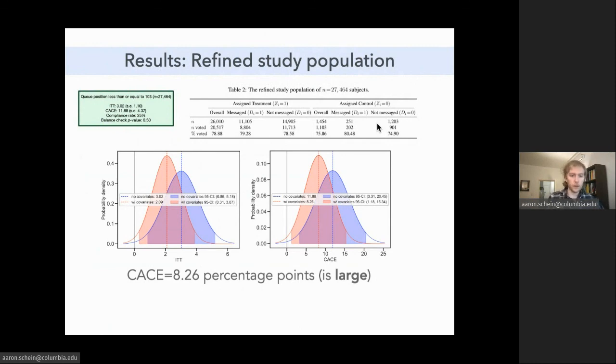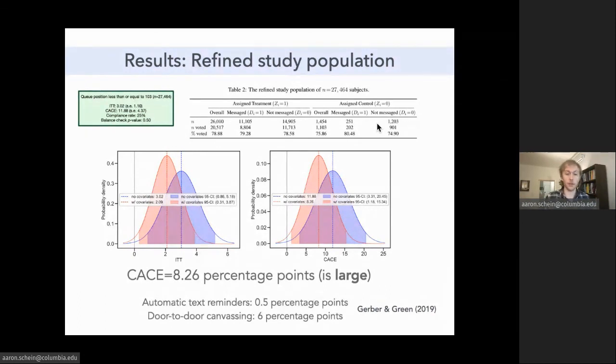This is a fairly profound effect size for get out the vote nudge. For comparison, automatic text reminders, so spam texts, meta-analysis puts that effect at around half a percentage point. And then on the other side, the sort of gold standard of get out the vote nudges, door-to-door canvassing, meta-analysis puts that effect size at about six percentage points. So this is a single study and there's more in the pipe, but as of now it looks like texts from friends or close contacts might be as effective as a door-to-door canvasser. This was particularly exciting when it came out during the last election cycle because door-to-door canvassing was severely limited by social distancing. So the idea that a socially distant tactic like friend-to-friend texting could replace door-to-door canvassing was particularly exciting.